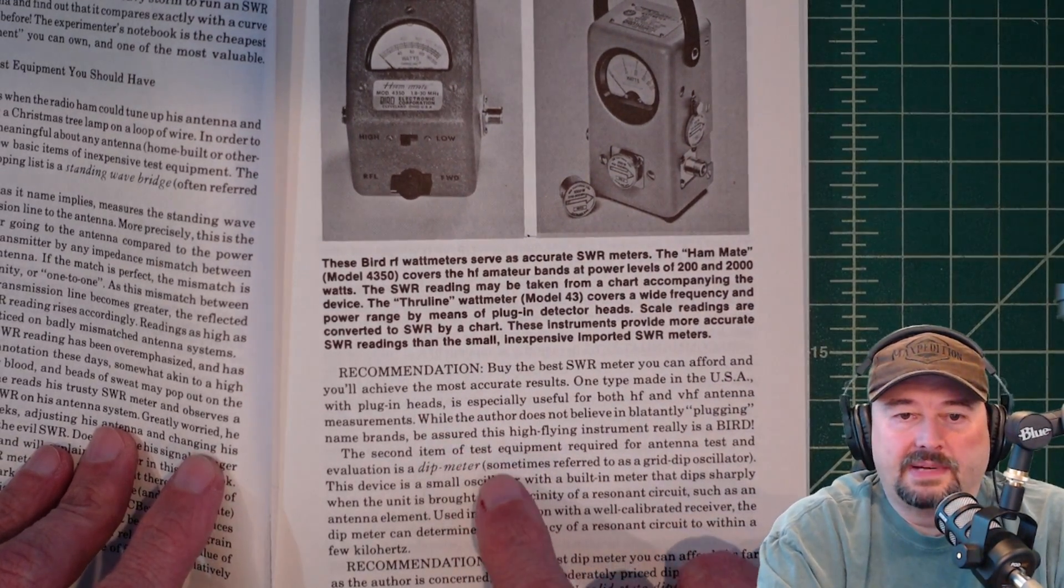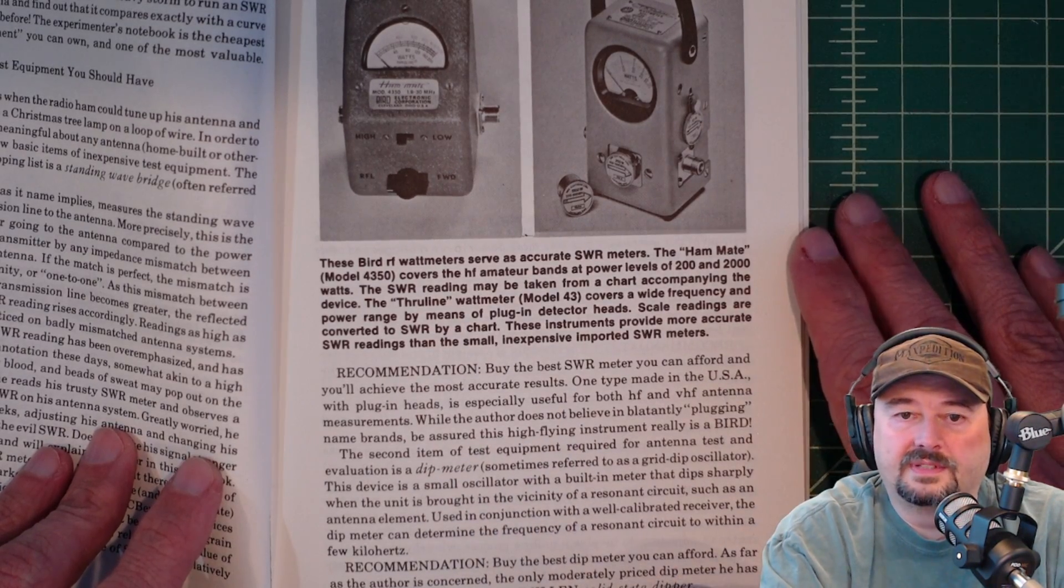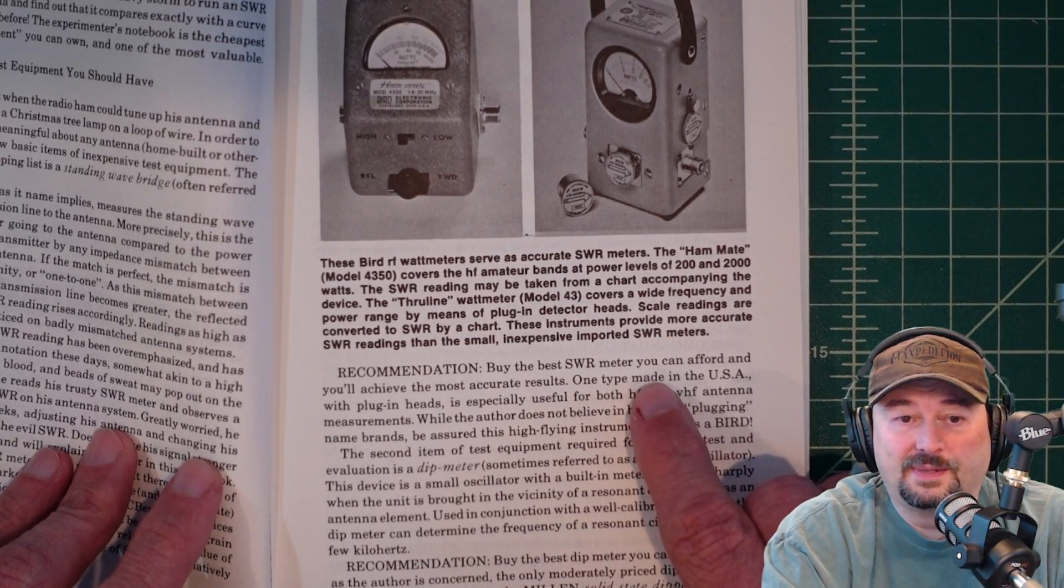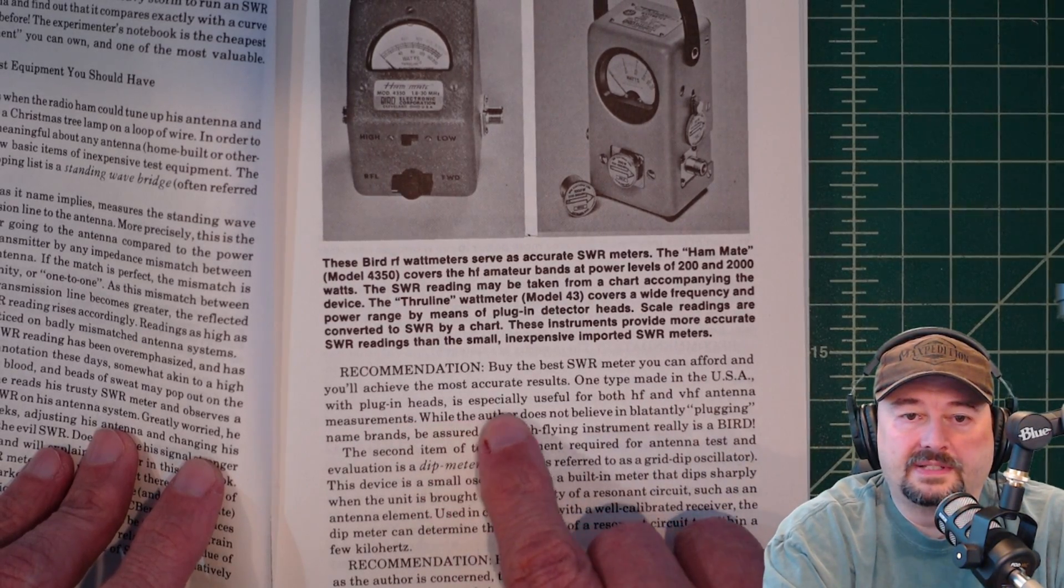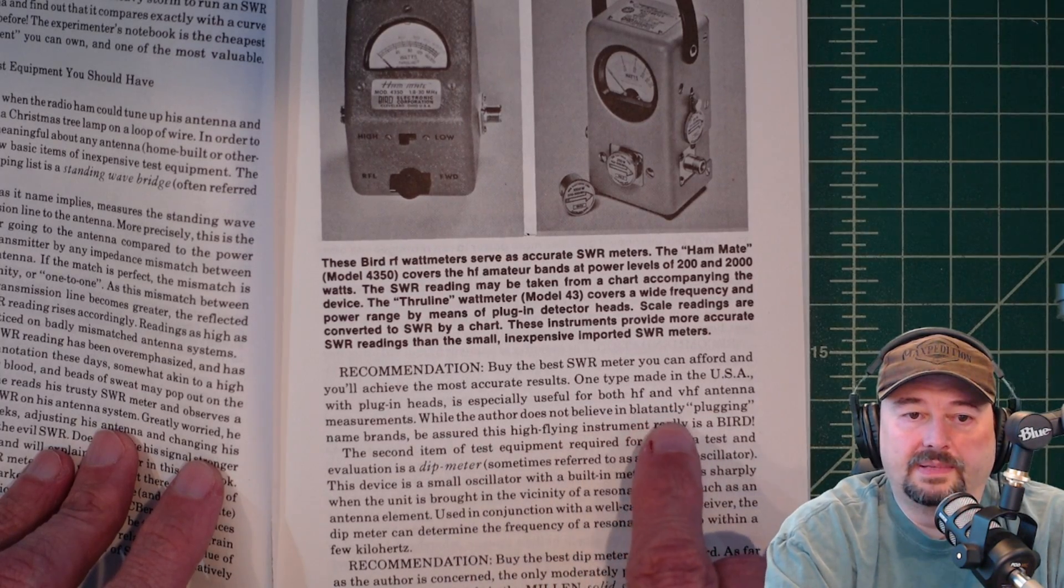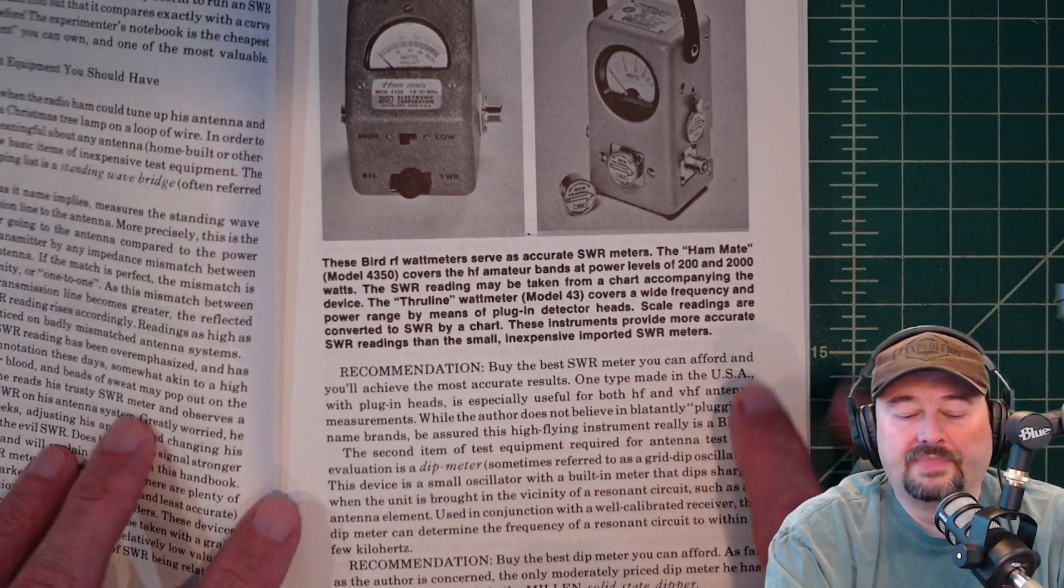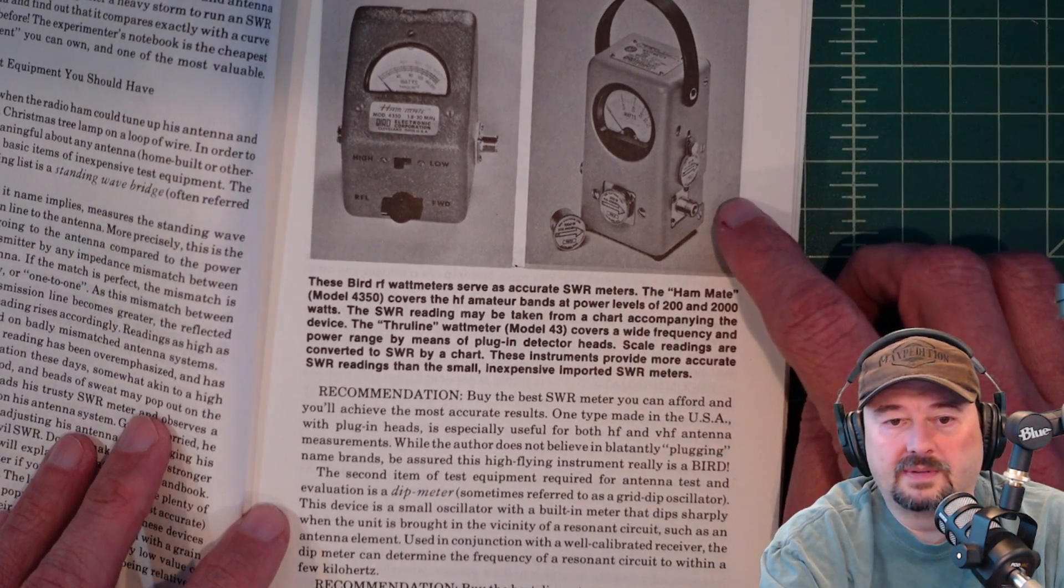But what he says is to buy the best SWR meter that you can afford. You'll achieve the most accurate results. One type made in the USA, good luck with that. With plug-ins, it's especially useful for both HF and VHF antenna measurements. While the author does not believe in blatantly plugging name brands, be assured that this high-flying instrument is really a bird. So he's talking about the bird watt meter right here.